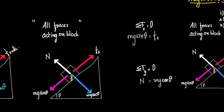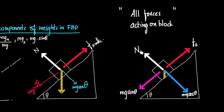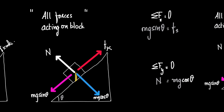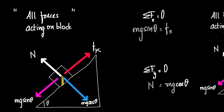Now let's understand all the forces acting on the block. We have four forces: normal reaction acting perpendicular to the inclined surface, mg cos theta acting perpendicular to the inclined surface, kinetic friction, and mg sin theta acting along the plane downwards. If we apply sigma Fx equal to 0 and sigma Fy equal to 0, since sigma Fx equals m times ax and sigma Fy equals m times ay,